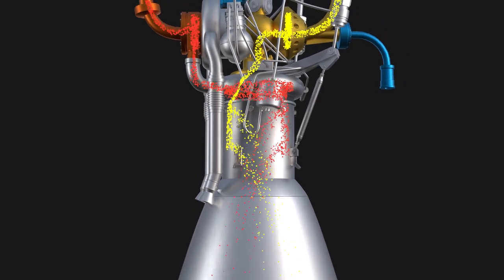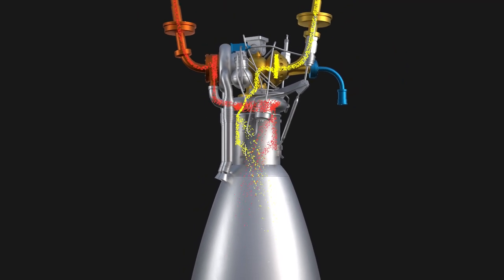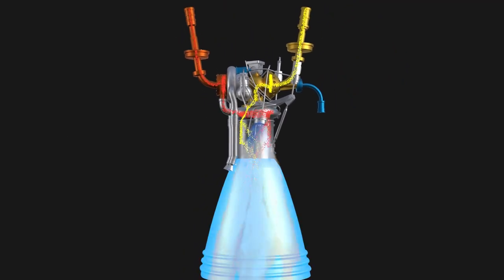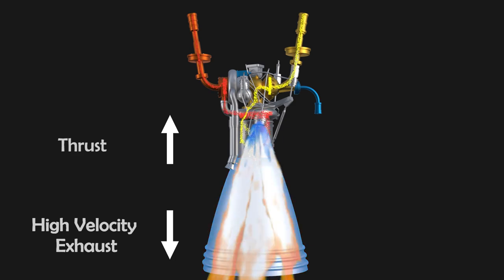This exhaust is then converted into high-velocity exhaust through this nozzle, which provides thrust to the rocket.